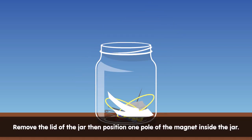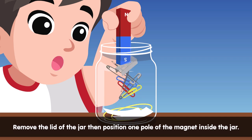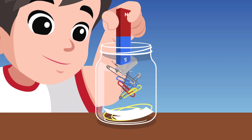Remove the lid from the jar. Then position one pole of the magnet inside the jar, just near its mouth. Do not move the magnet. Observe what happens.